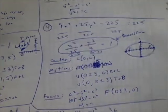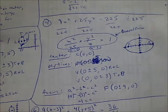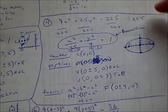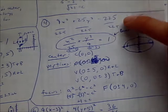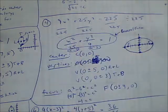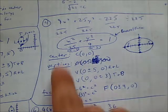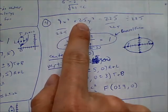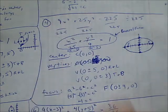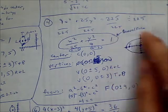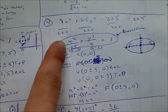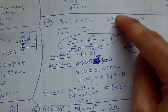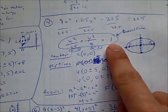With number 4, we run into our first problem not written in standard form. A good first step is to divide everything by 225 — divide by 225, divide by 225, divide by 225. When we do that, we reduce all of the fractions. Remember, we can't leave numbers on top of the fractions in front of X and Y. So 9 over 225 reduces to 1/25, and 25 over 225 reduces to 1/9, and 225 over 225 reduces to 1.